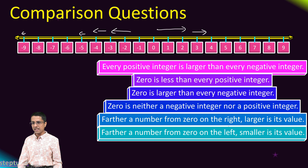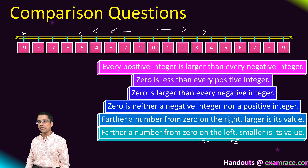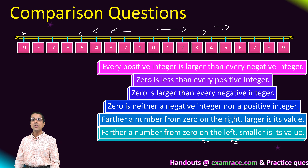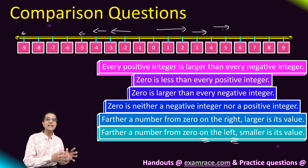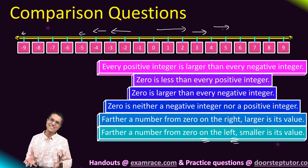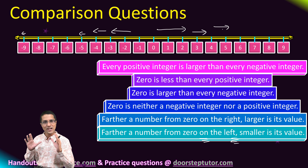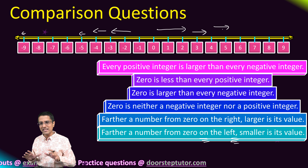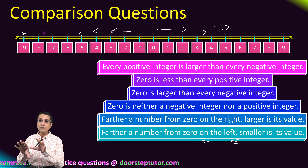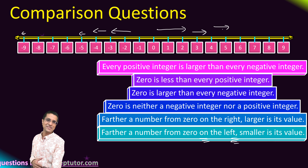As I go further away from 0 on the left, I encounter smaller and smaller numbers. If I go further away from 0 towards the right, I encounter larger and larger numbers. Keep these concepts clear and you will never make a mistake in comparison questions — they are actually very simple.